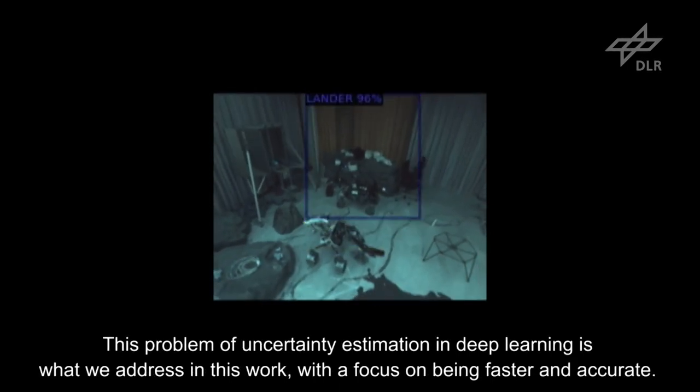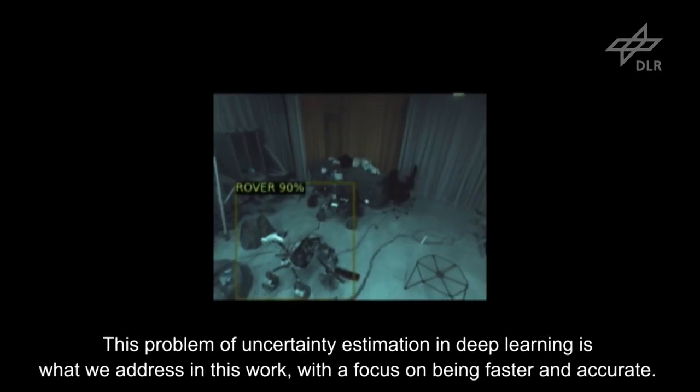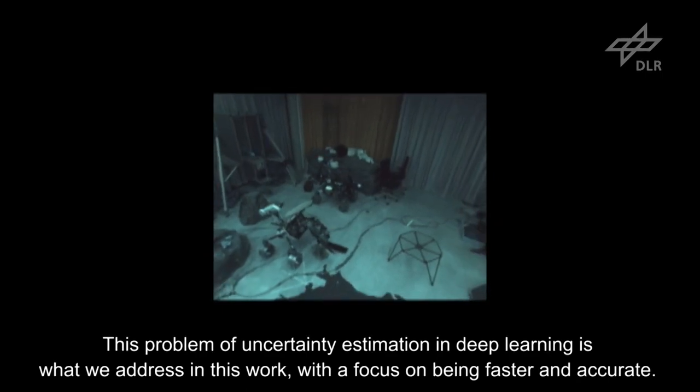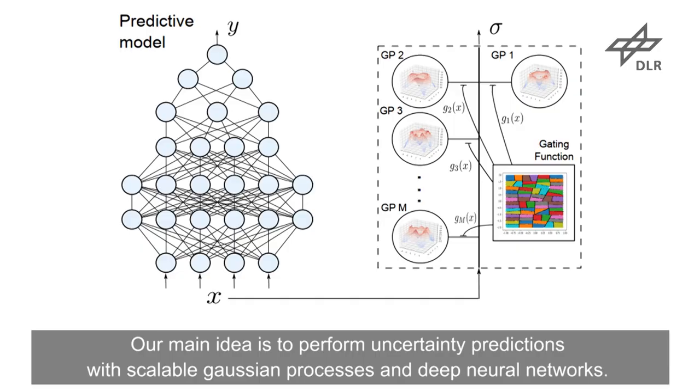This problem of uncertainty estimation in deep learning is what we address in this work, with a focus on being faster and accurate. Our main idea is to perform uncertainty predictions with scalable Gaussian processes and deep neural networks.